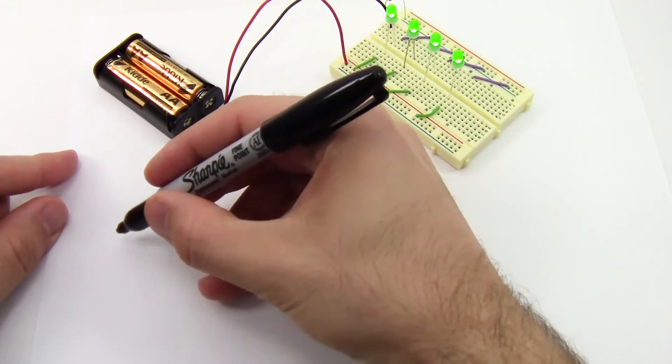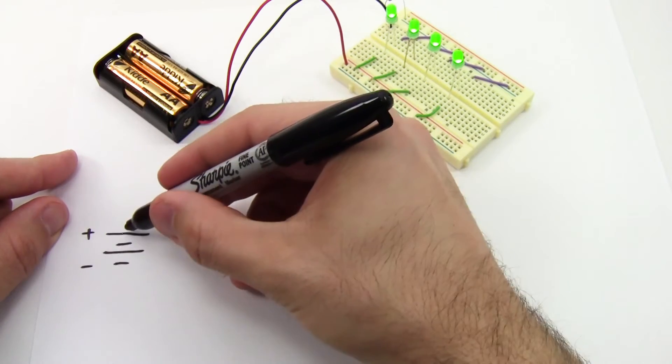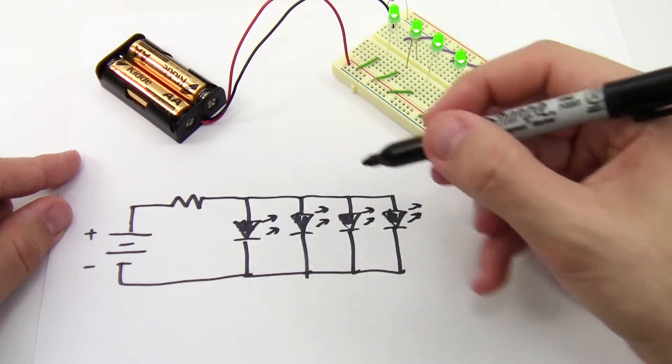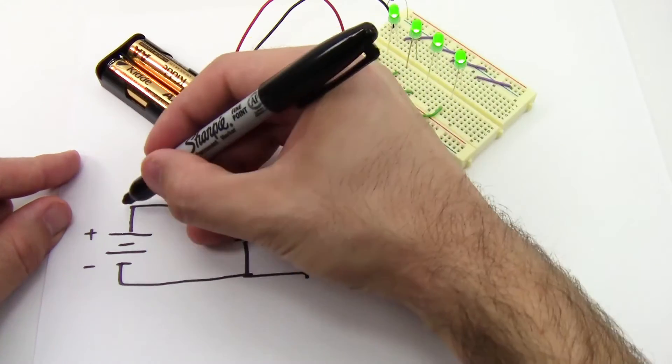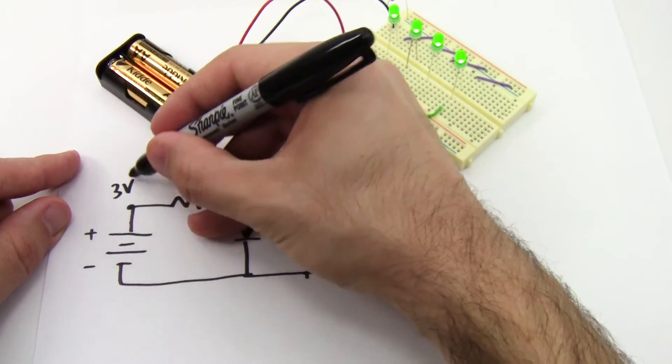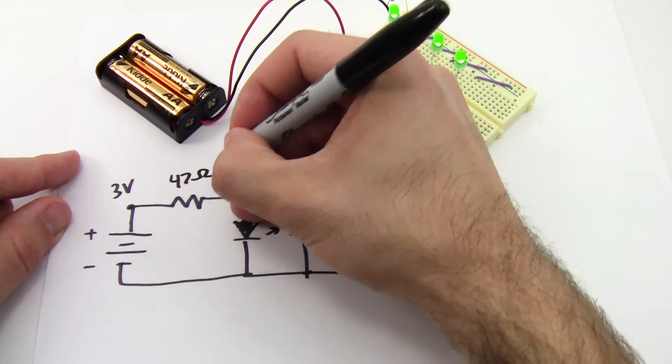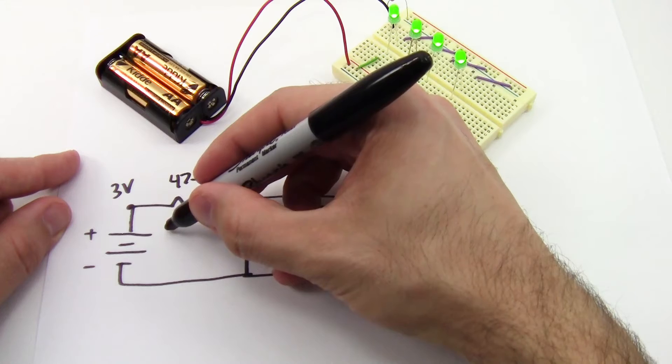So in this circuit, we still have our 2 by AA battery pack, and we've added three more LEDs in parallel to the original one. The LEDs all have the same forward voltage drop, so the voltage at this point hasn't changed. That's still 2 volts, and the voltage here is still 3 volts. So if I still have the 47 ohm resistor in place, then my current through this resistor hasn't changed much. It's still about 20 milliamps.